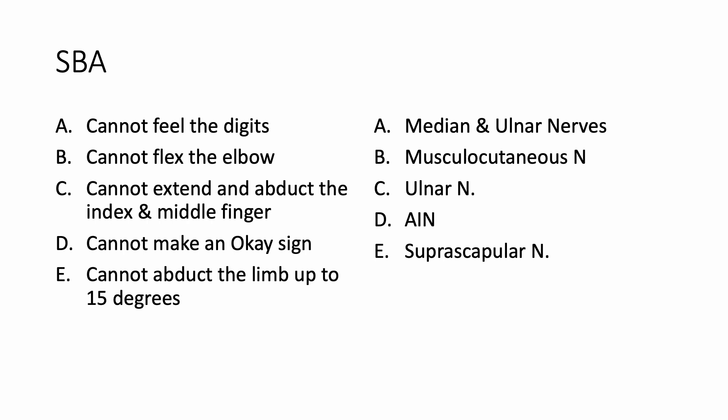Let's dissect the answer choices. Cannot feel the digits — that's distal sensory involvement, that could be median and ulnar nerve, so that's not specific to anterior interosseous nerve. Cannot flex the elbow — that could be due to pain, and if someone has an axilla injury, that is the musculocutaneous nerve because they supply the BBC: brachialis, biceps brachii, and coracobrachialis. Cannot extend and abduct the index and middle finger — that is scissors, that's ulnar nerve. Cannot make an okay sign — that is the anterior interosseous nerve. Cannot abduct the limb up to 15 degrees — that is your suprascapular nerve for the supraspinatus muscle.